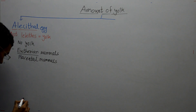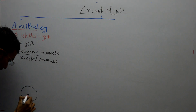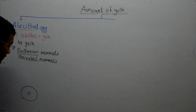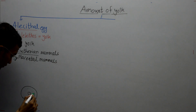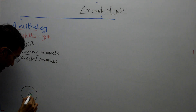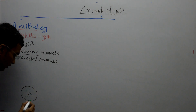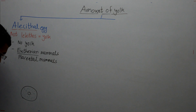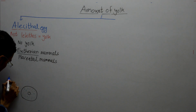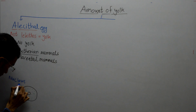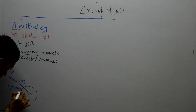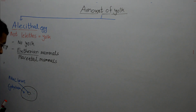The alecithal egg contains a nucleus and cytoplasm — the cytoplasm of the egg is known as ooplasm — but there is no yolk present. This is the alecithal egg.